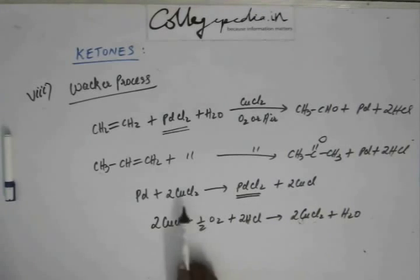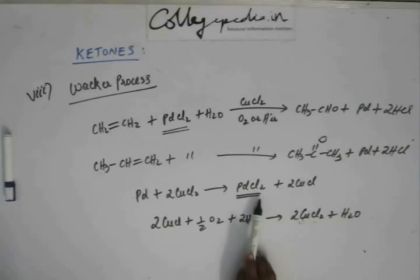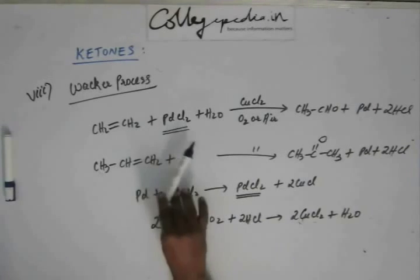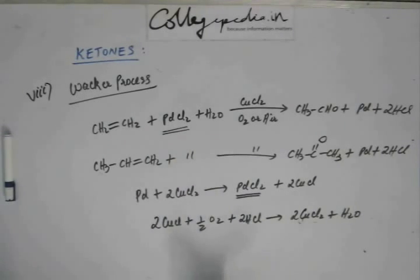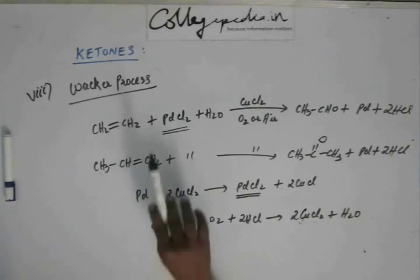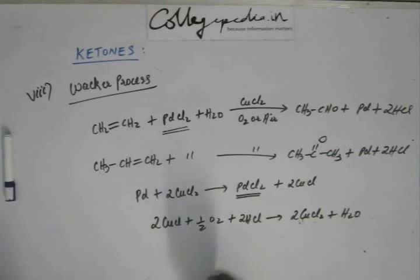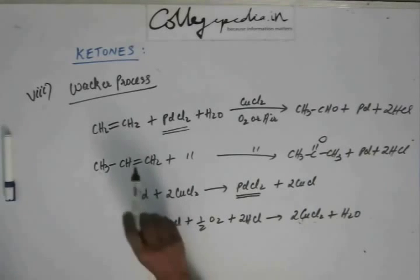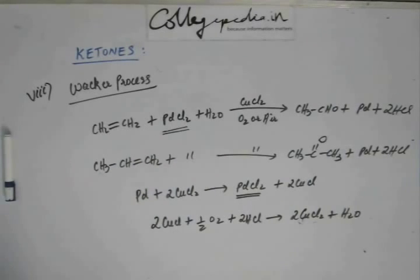That cupric chloride can be again used to oxidize palladium to palladium chloride. That palladium chloride will be used again in the reaction. So there is no need to add much of the palladium chloride. This palladium chloride will be utilized and again regenerated in the reaction, so that this palladium chloride keeps on oxidizing the alkene that we have taken. This is the idea of the reaction, this is the Wacker process.